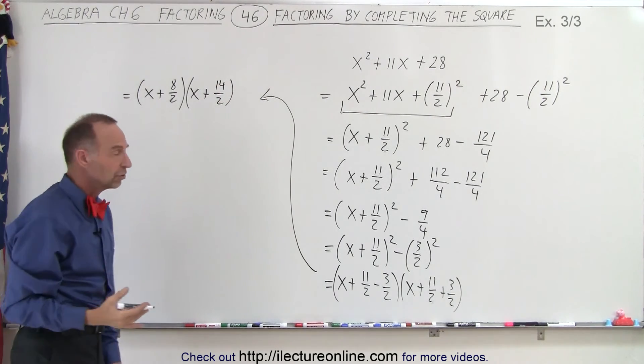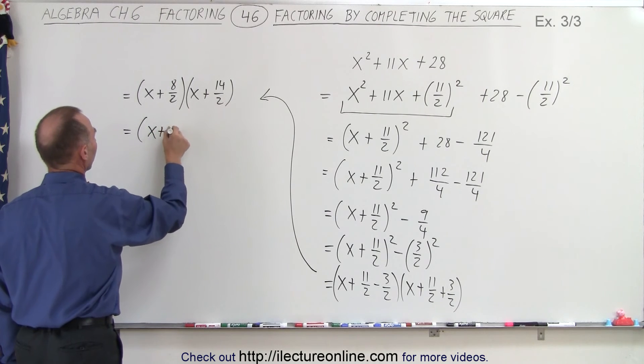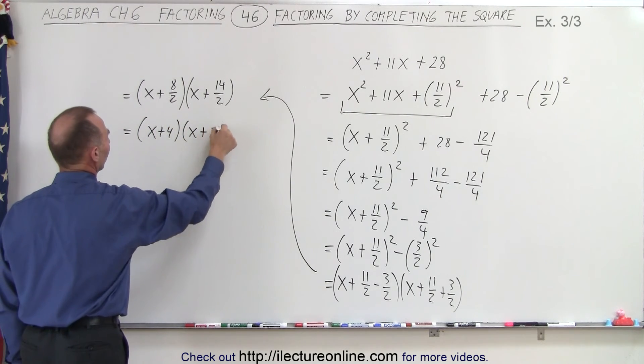Of course, you don't want to leave it as a fraction since you can simplify that. So this is written as x plus 4 times x plus 7.